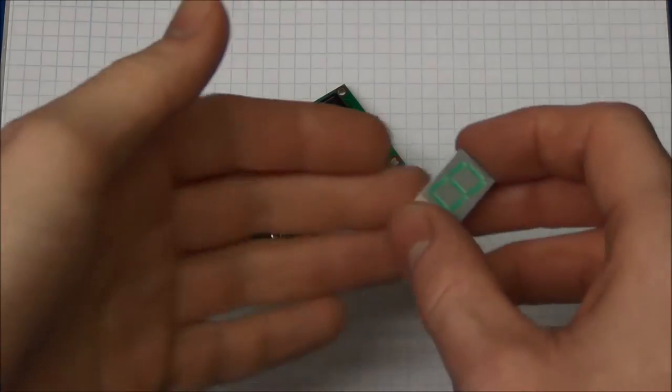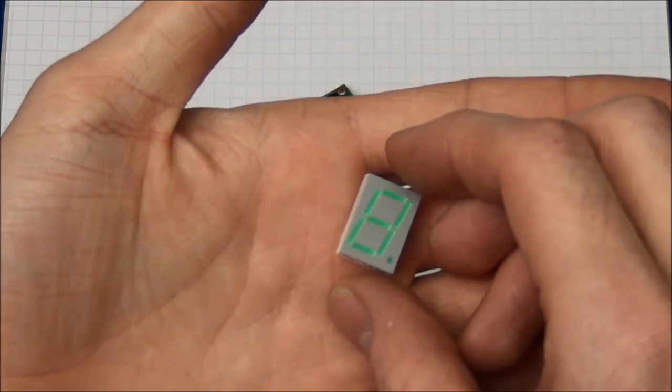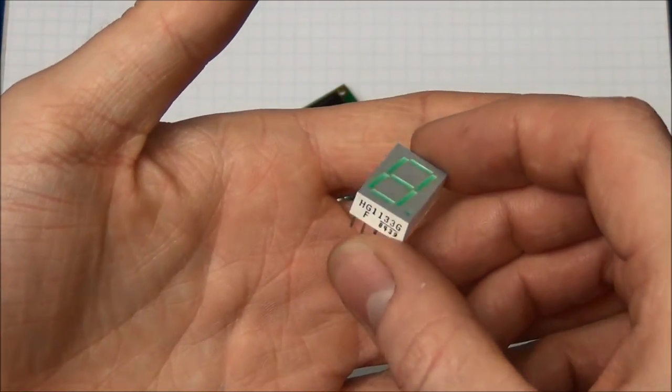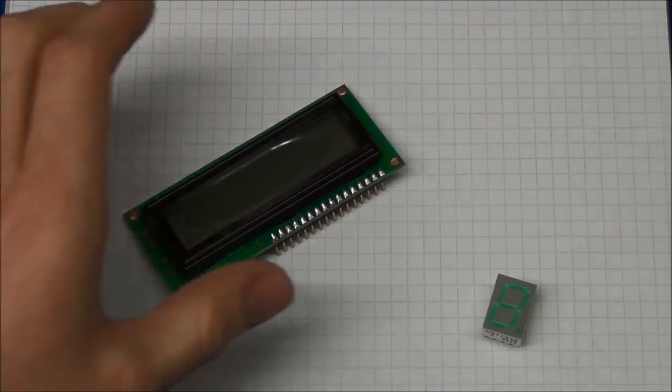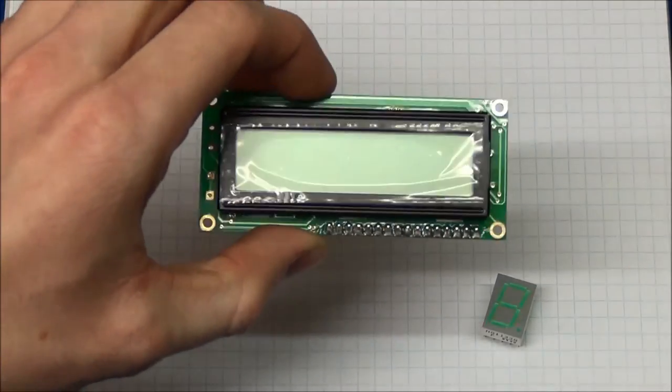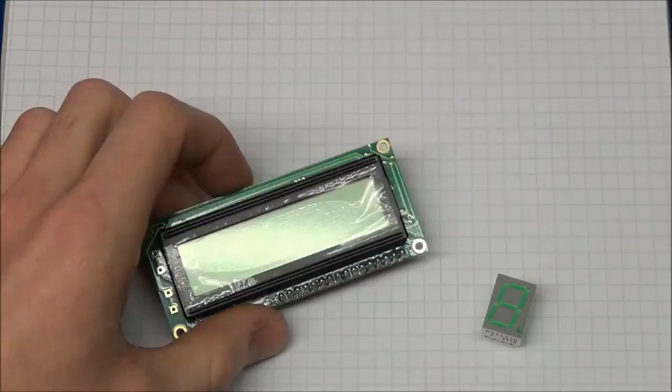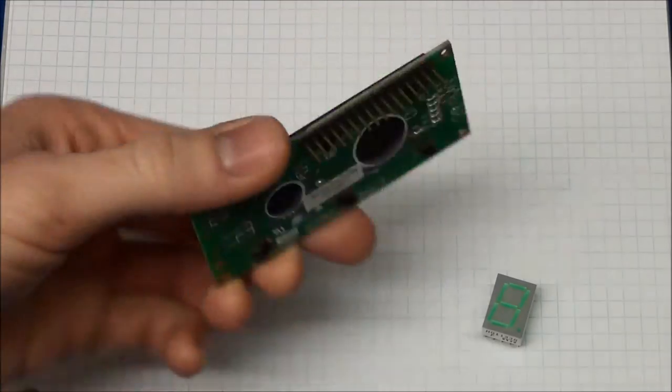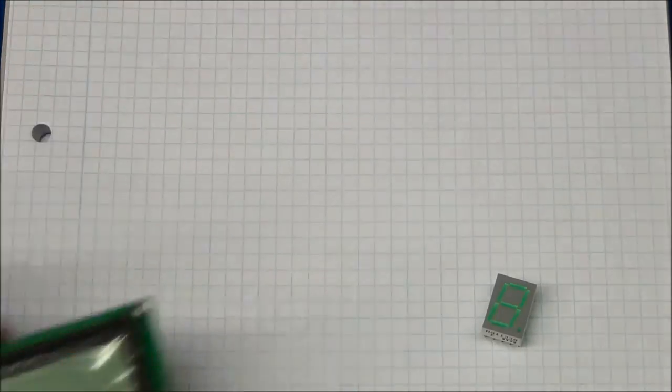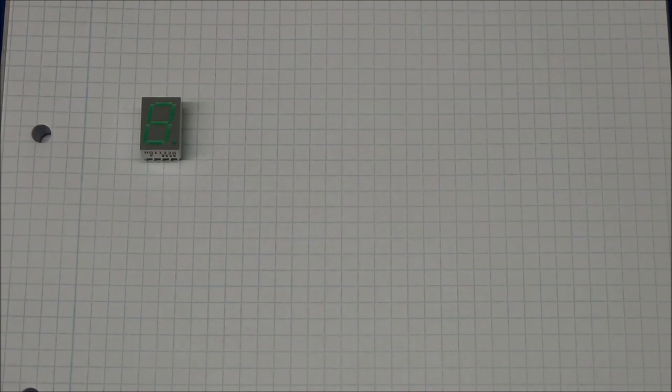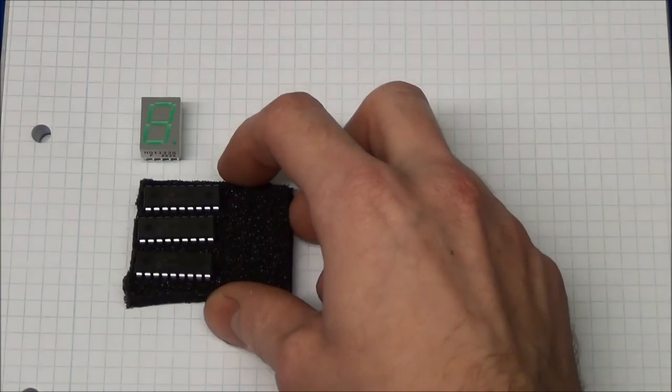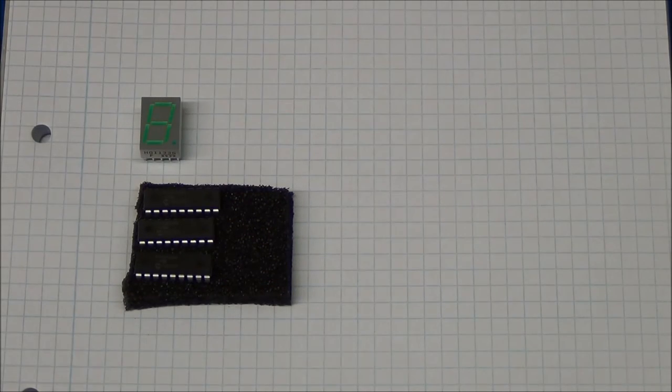I decided to use four seven segment displays for this project because I think they look nice. I could of course have used one of these 16 by 2 character LCD displays, but I use these for a lot of projects and I wanted to try something new. And I will of course need something to control all this, and the easy option is a microcontroller so that's what I will use.